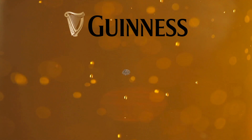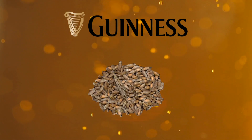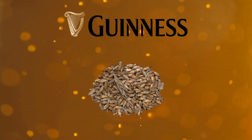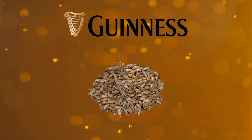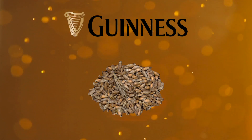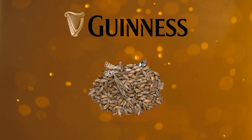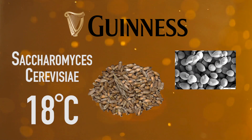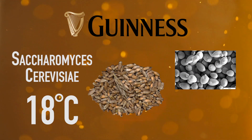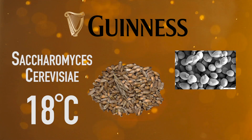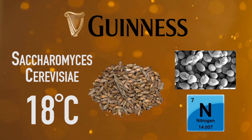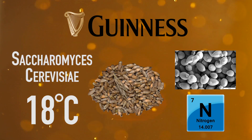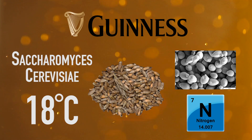Guinness, a darker beer, has dark roasted malted grains that give the color and light roasted malts that provide sugar for fermentation. They use a yeast named S. Cerevisi, and ferment at 18 degrees Celsius for two or three weeks. The beer is then filtered and carbonated with nitrogen, which results in the creamy taste due to nitrogen creating smaller carbonation bubbles.